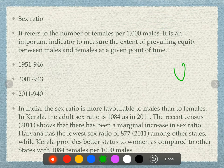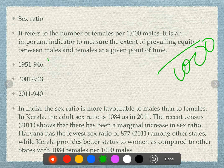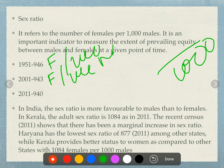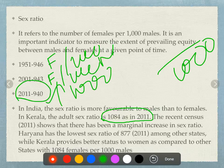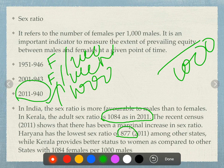Sex ratio refers to how many females per 1000 males. In 1951, there were 946 females per 1000 males. In 2001, there were 943 females per 1000 males. In 2011, there were 940 females per 1000 males. In Kerala, there are 1084 females per 1000 males.